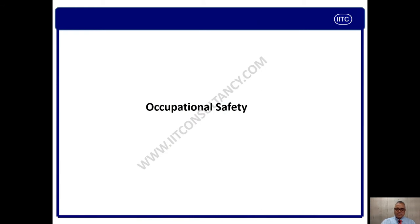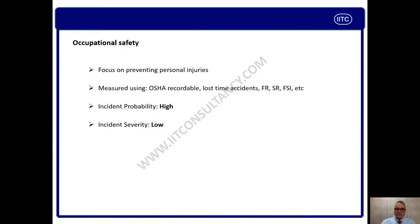Now the basic thing we need to understand is the difference between occupational safety and process safety. Let us start with occupational safety. As you guys know, occupational safety focuses mainly on preventing personal injuries. Personal injuries here means leg injury, finger injury, hand injury, face injury, eye injury and any body part injuries. This occupational safety can be measured as per the OSHA standard in LTI — loss time injuries or loss time accidents. FR means frequency rate, SR means severity rate, FSI means frequency severity index, etc.